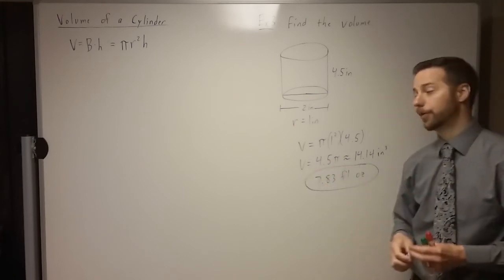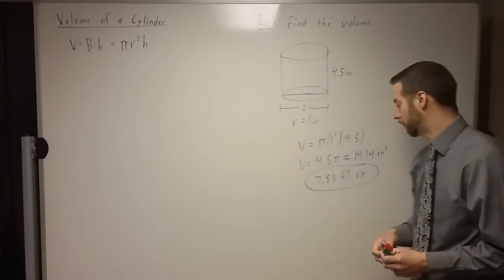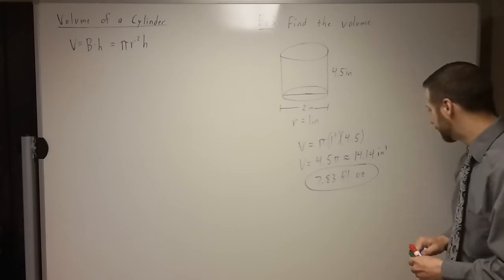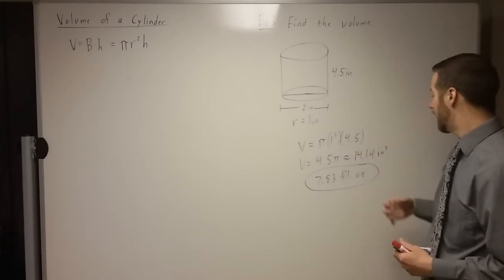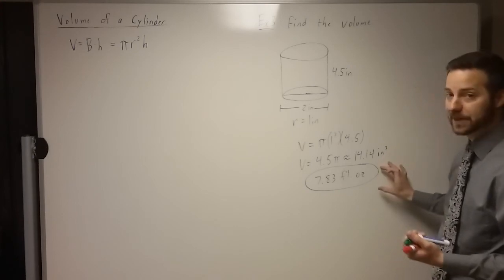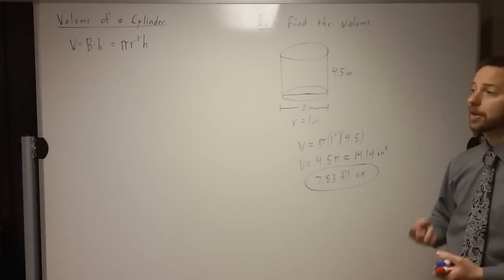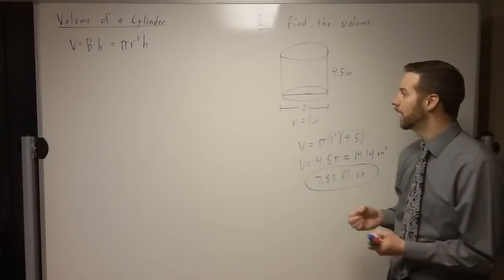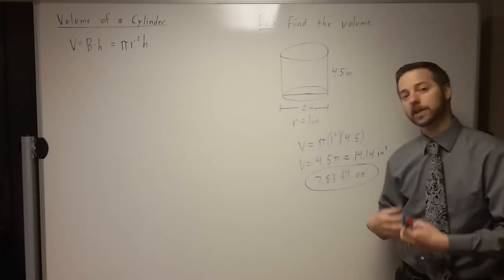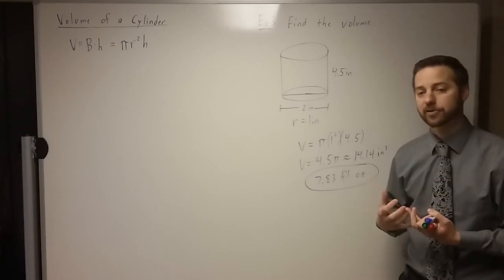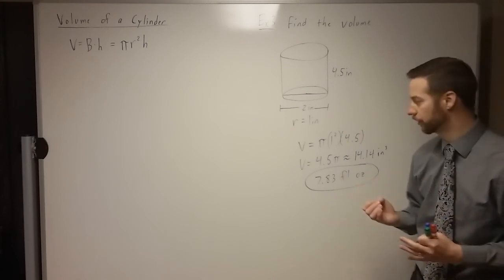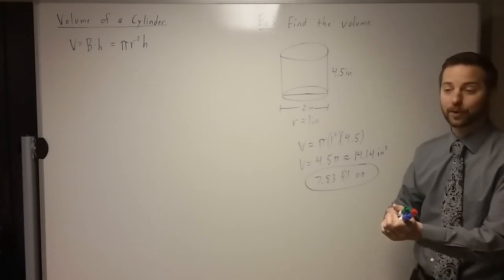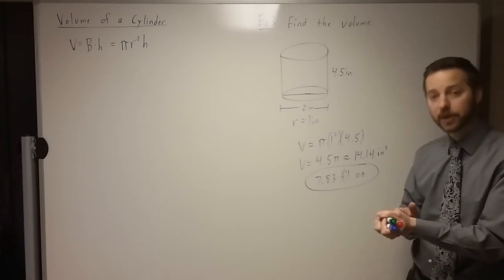So the volume of that little thermos is about 7.83 fluid ounces — they probably marketed it as an 8 ounce container. That's how we find the volume of a cylinder. You might see volume listed in gallons or fluid ounces — those are still volume, just not directly tied to length measurements. That's how volume is often expressed for things like swimming pools, measured in gallons rather than cubic feet. So there's how we find the volume of prisms and cylinders. Later we'll start talking about the volumes of pyramids and cones as well.